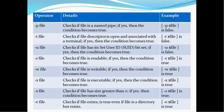There are some other important operators. Hyphen p file checks if the file is a named pipe. If yes, the condition becomes true — use hyphen p followed by the file name. Hyphen t file checks if the file descriptor is open and associated with a terminal. If yes, the condition becomes true.